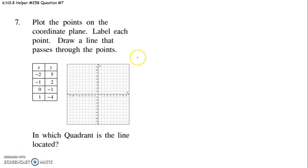Grade 6, this is to help you with question 7 on CR Helper 25, version B. It says, plot the points on the coordinate plane. Label each point. Draw a line that passes through the points. And they're going to give us our points in a table. In which quadrant is the line located?